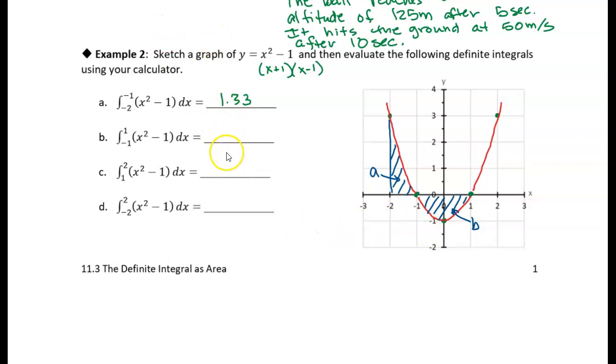What do I get if I integrate from -1 to 1? I get -1.33, which makes sense because it's area below the curve, so it's negative area. The next question is to integrate from 1 to 2. We're talking about this area right here.